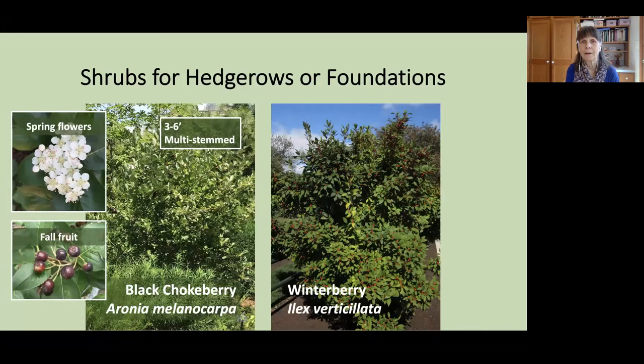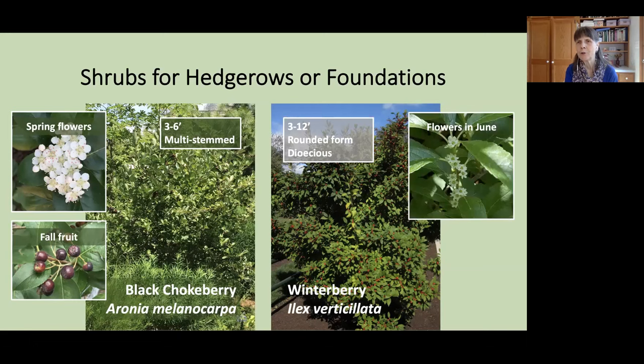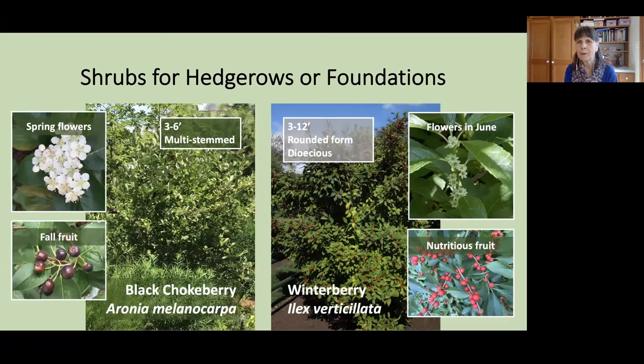Winterberry, Ilex verticillata, is another one of our native hollies — this one is a deciduous holly, unlike the Inkberry. It reaches about 3 to 12 feet and has a rounded form. It has fairly subtle flowers in June, but absolutely brilliant fruit. This would not be something we would eat, but it's very nutritious and will actually remain on the shrub through the fall, the winter, and into the spring, providing great nutrition for our migrating birds.